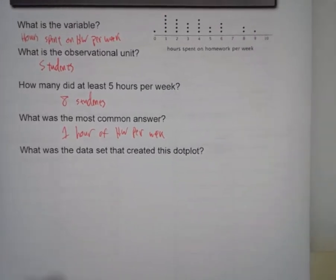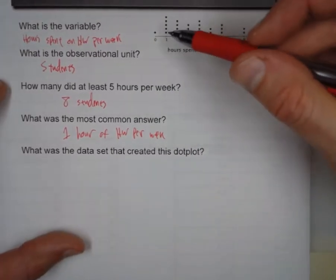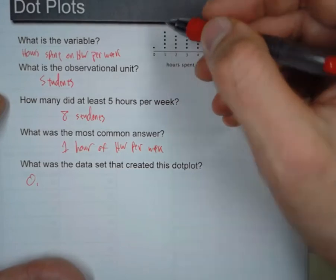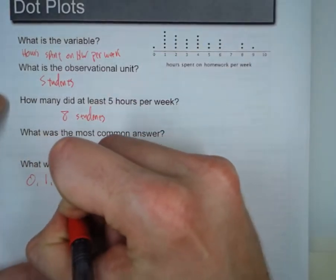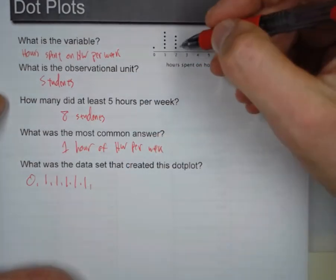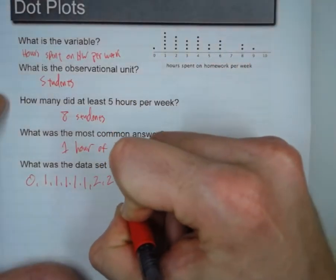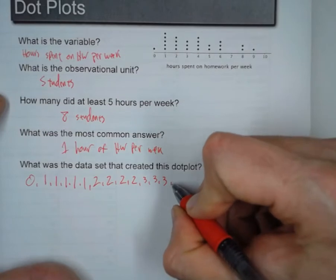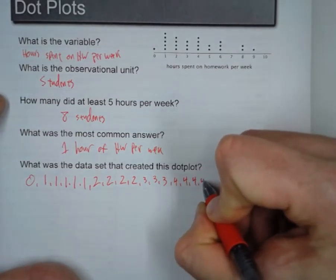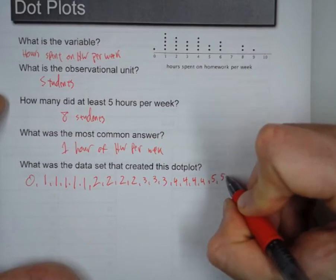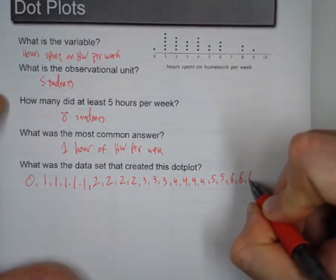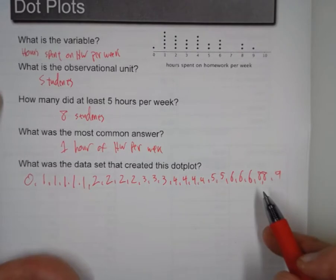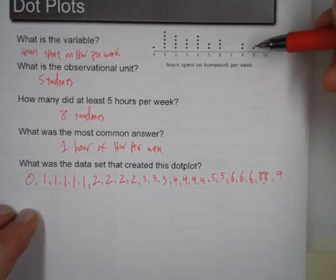And then the last one. What was the data set that created this dot plot? So looking at this, we can recreate what the data set was. So zero happened once. One is going to happen five times, so one, two, three, four, five. Two is going to happen four times, so one, two, three, four. Three happens three times. Four happens four times. Five happens twice. Six happens three times. Eight happens twice. And nine happens once. So there is our data set. This is the set of data that would create this dot plot.